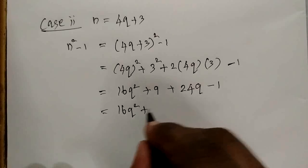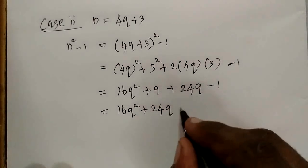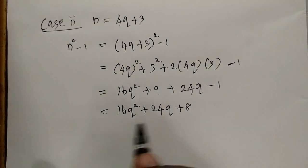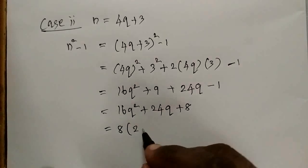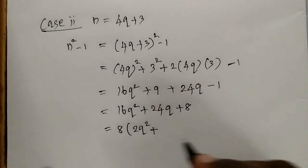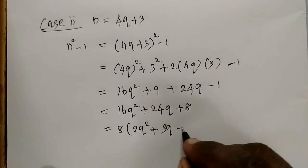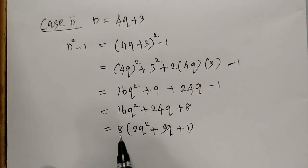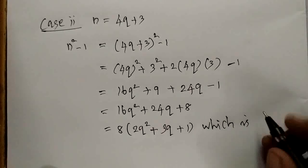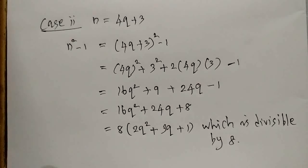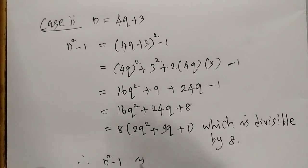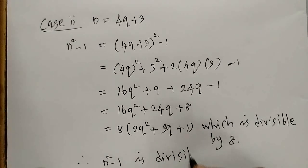Simplifying: 16q² + 24q + 8. Taking 8 as the common factor: 8(2q² + 3q + 1). Since 8 is a factor, this is also divisible by 8. Therefore, in both cases, n² - 1 is divisible by 8.